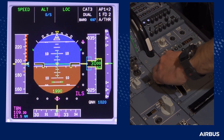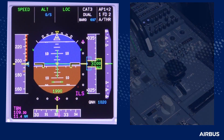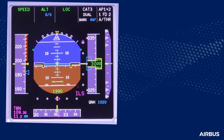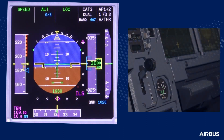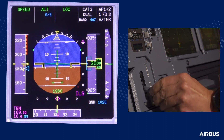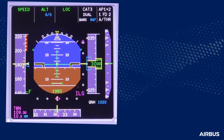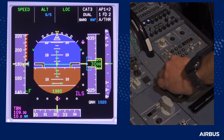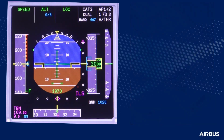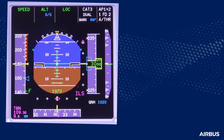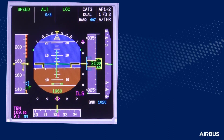When ready for approach, the crew starts configuring the aircraft towards a final landing configuration. Because the angle of attack changes during turns, this configuration change is best achieved with wings level to reduce the risk of activating the angle of attack protection. When the final landing configuration is established, the calculated VAPP from the FlySmart landing performance module is selected.